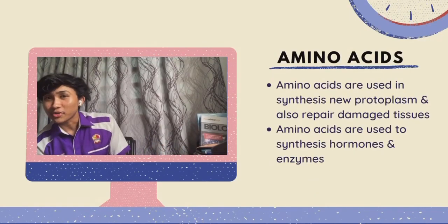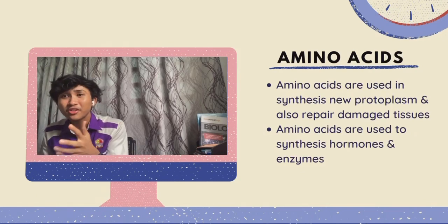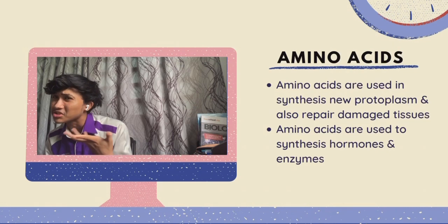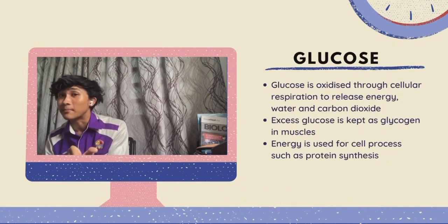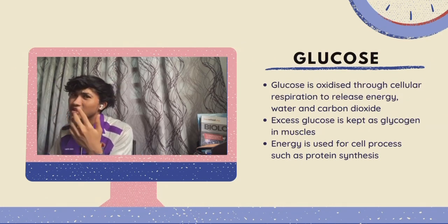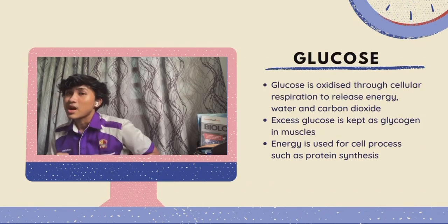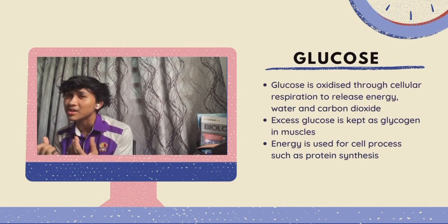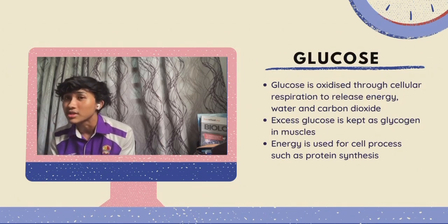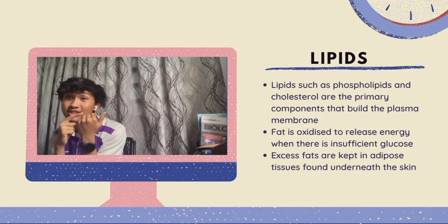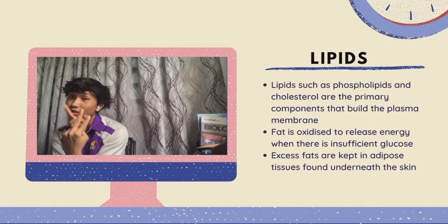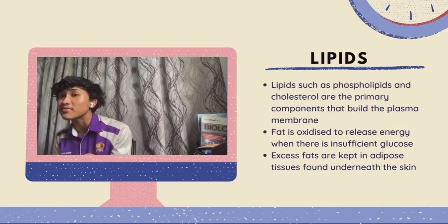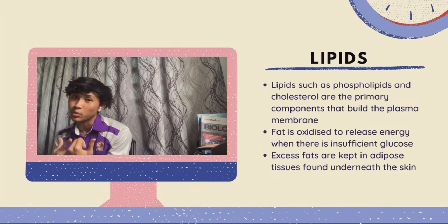In the assimilation process in the cells: amino acids are used to synthesize new protoplasm, repair damaged tissue, and synthesize hormones and enzymes. For glucose: it is oxidized through cellular respiration to release energy, water, and carbon dioxide. Excess glucose is stored as glycogen in the muscles. For lipids: phospholipids and cholesterol are primary components of the plasma membrane. Fats are also oxidized to release energy when glucose is insufficient, and excess fats are stored in adipose tissue underneath the skin.